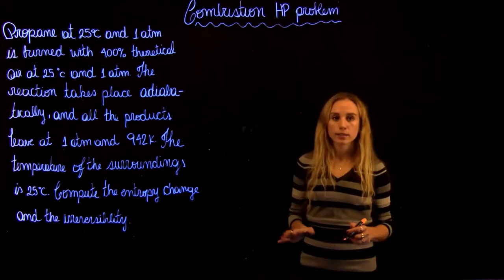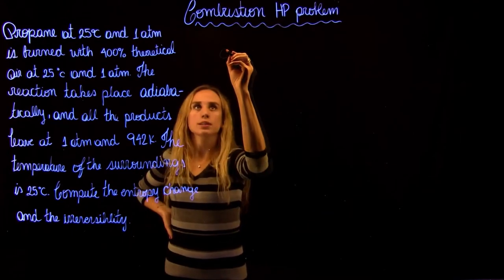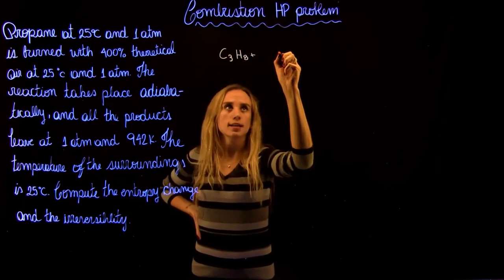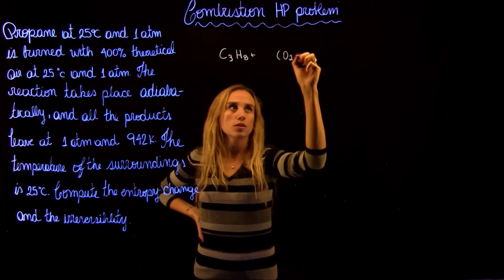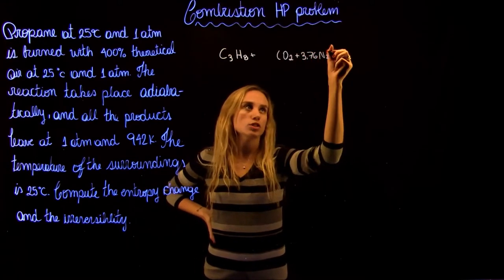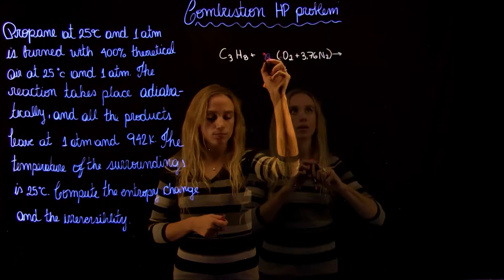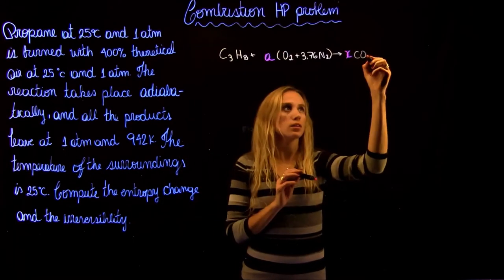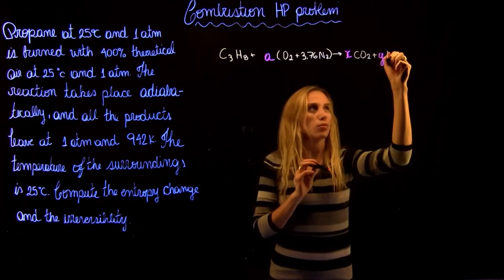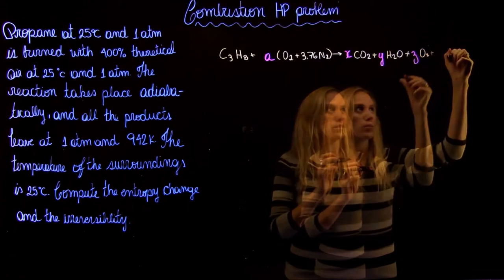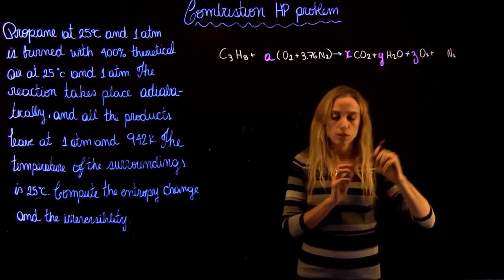Let's start by writing the combustion equation. So we have propane, which is C3H8, which is going to get oxidized by air. So the oxygen and 3.76 nitrogen, we can call this A. And then we're going to have CO2, X CO2, plus Y of water, plus Z of oxygen, plus W nitrogen.